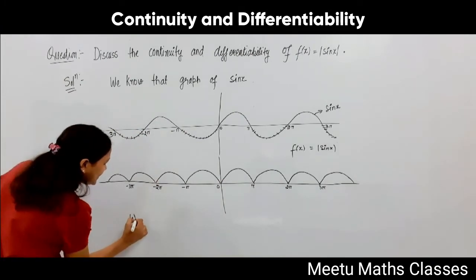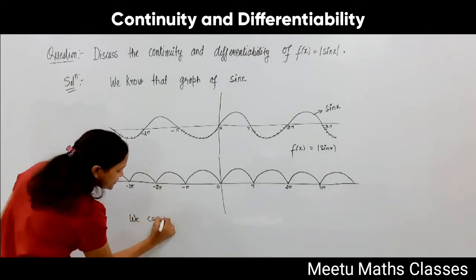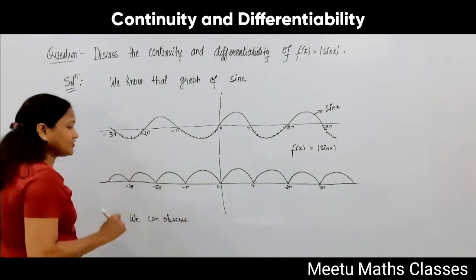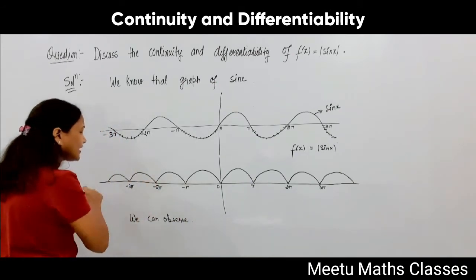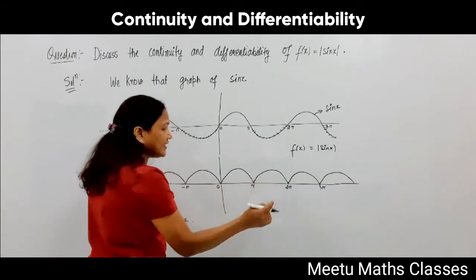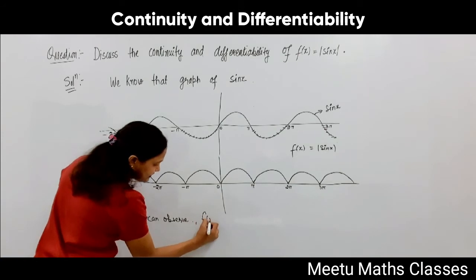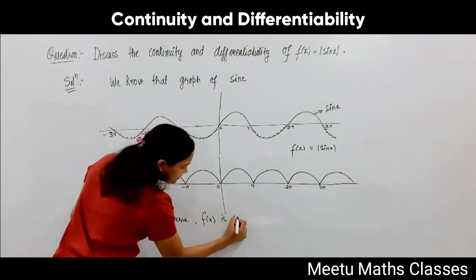Now we can observe that it is a continuous function because it does not have any break or discontinuity. That implies we can observe that f(x) is continuous everywhere.